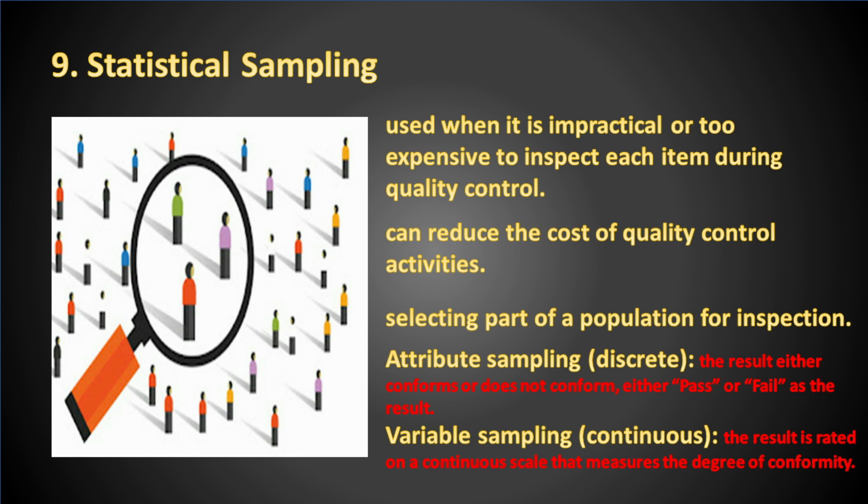Variable sampling involves a continuous result rated on a continuous scale that measures the degree of conformity. For example, the marks of a student — one student can have 70 marks while another can have 85 marks. Statistical sampling is a tool/technique used in the control quality process.